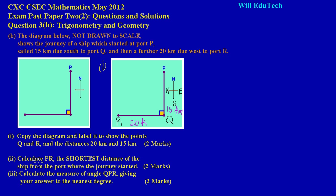Now for Part 2, they're asking us to calculate PR — the shortest distance from the port where the journey started. PR goes from P at the top to R at the far left. If I connect those two points, I can see that this forms a right angle triangle with two known sides.